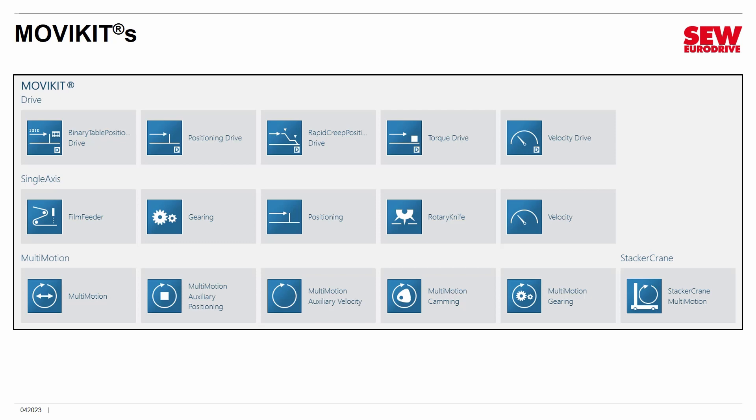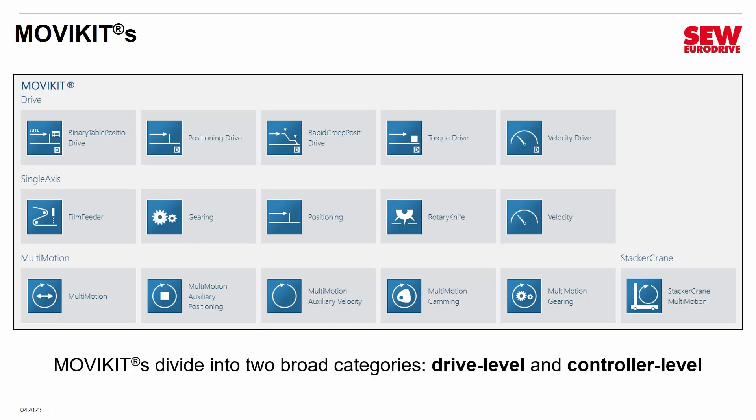These are the current MoVC kits available right now — the list may change, and it has been expanding since 2016. An important concept: MoVC kits divide into two broad categories called drive level and controller level. The first row is labeled drive for drive level kits, and the other two rows are controller level.